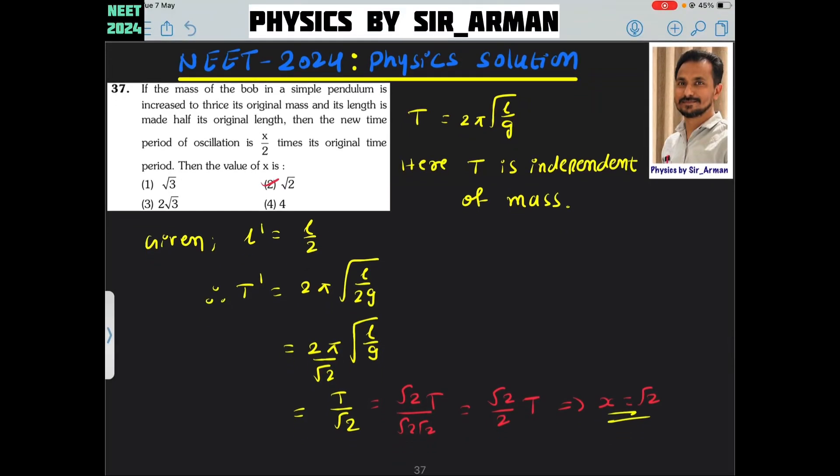Question number 37. Again, very easy question. The mass of the bob in a simple pendulum is increased to thrice of its original mass. Remember,